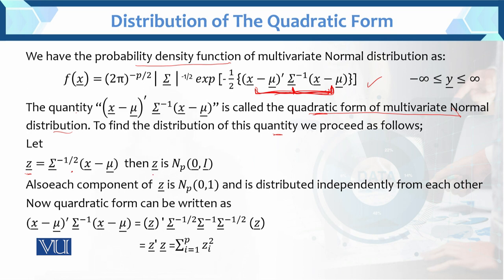This z follows the normal distribution with mean zero and variance-covariance matrix identity. Also, each component of z — since it is multivariate normal — each component of z follows the standard normal distribution, independently from each other, with mean zero and variance one.